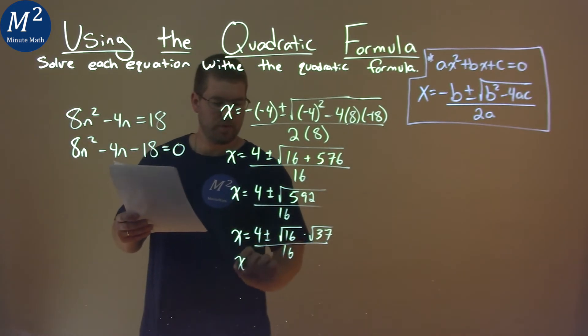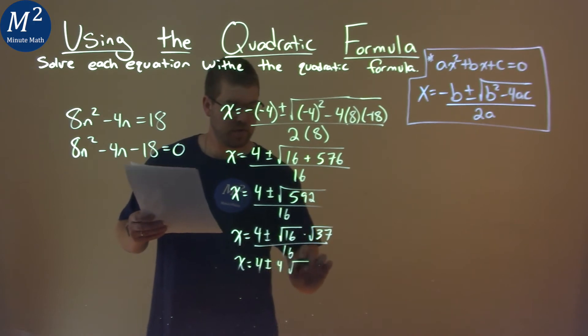From there, we know the square root of 16 is 4, so we have 4 plus or minus 4 square root of 37, over 16.